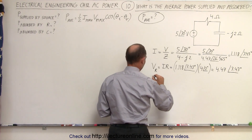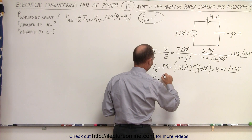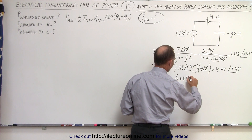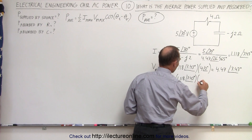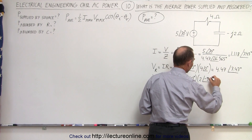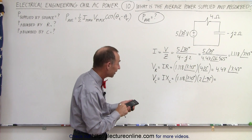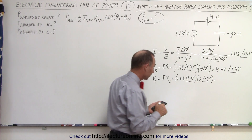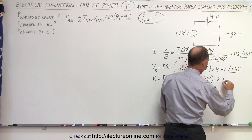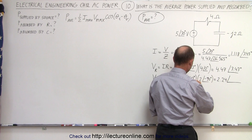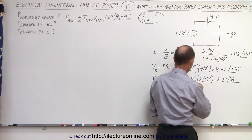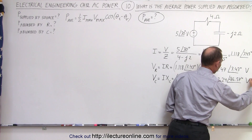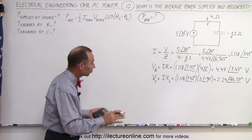Now the voltage across the capacitor — not the inductor, but the capacitor — is the current times X sub C. That would be 1.118 with a phase angle of 3.43 degrees, multiplied by 2 with a phase angle of minus 90 degrees. That gives us a magnitude of 2.24 volts. The phase angle would be 3.43 minus 90, giving minus 86.57 degrees. So now we have the voltage across each of the two components.